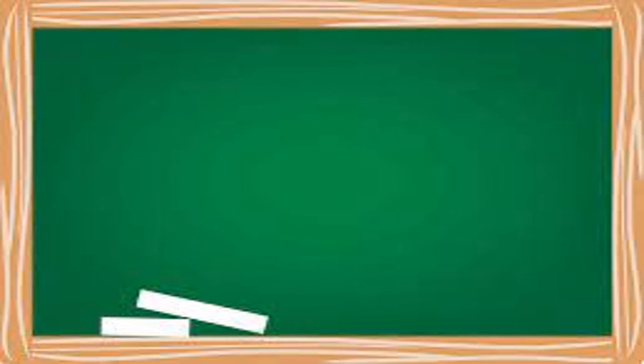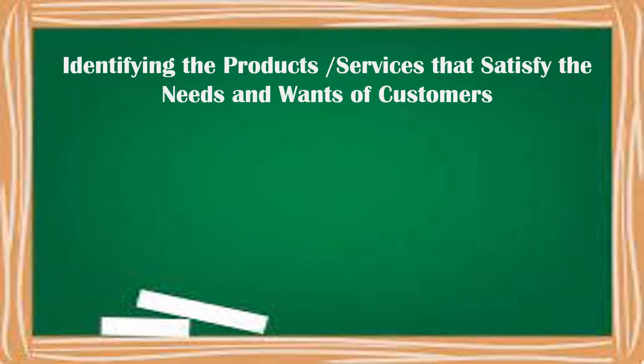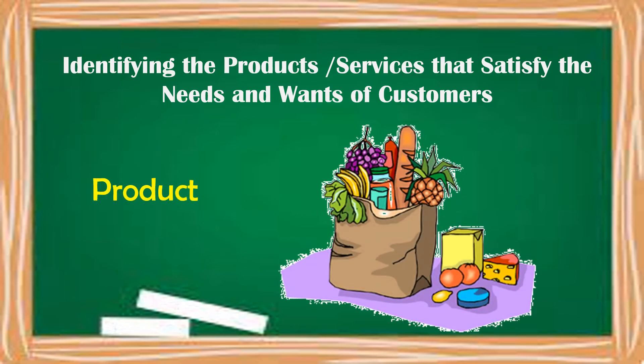Let us now discuss identifying the products and services that satisfy the needs and wants of the customer. But first, let us define what is a product. A product is anything offered to a market with the objective of satisfying a want or a need. Products are tangible, meaning to say they can be seen and felt. This refers to the objects or products that are manufactured, stored, transported, marketed, and sold.